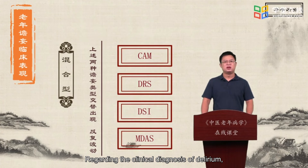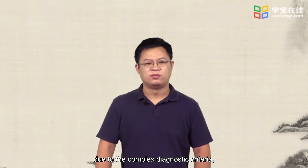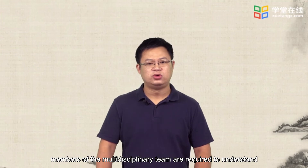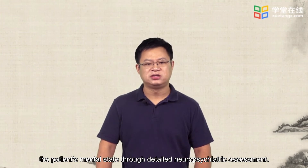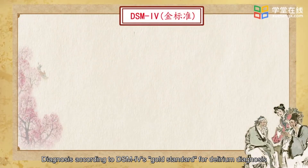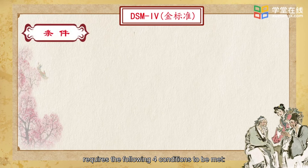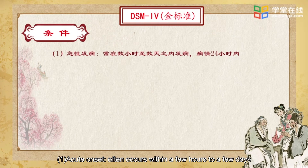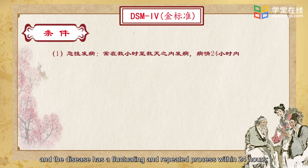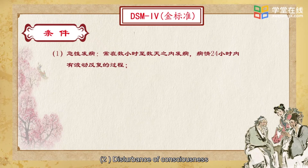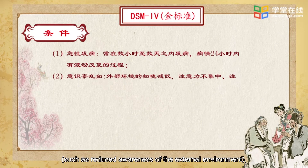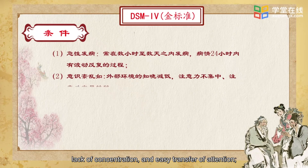Regarding the clinical diagnosis of delirium, due to the complex diagnostic criteria, members of the multidisciplinary team are required to understand the patient's mental state through detailed neuropsychiatric assessment. Diagnosis according to DSM-IV's gold standard for delirium diagnosis requires the following four conditions to be met. First, acute onset: often occurs within a few hours to a few days and the disease has a fluctuating and repeated process within 24 hours. Second, disturbance of consciousness, such as reduced awareness of the external environment, lack of concentration, and easy transfer of attention.